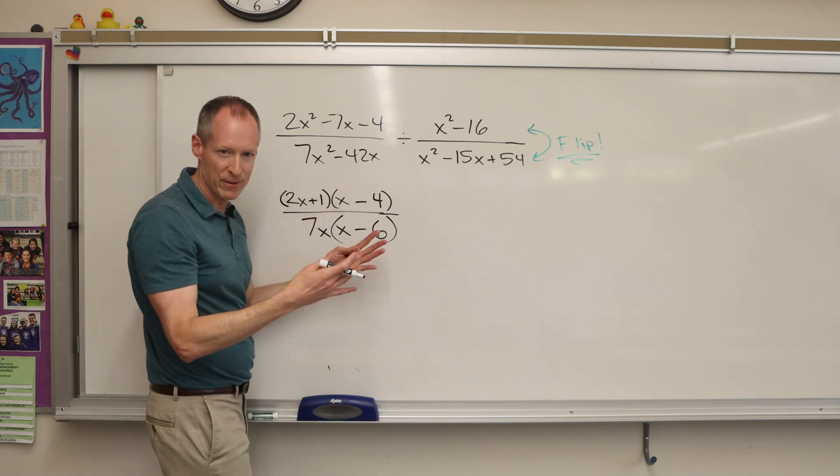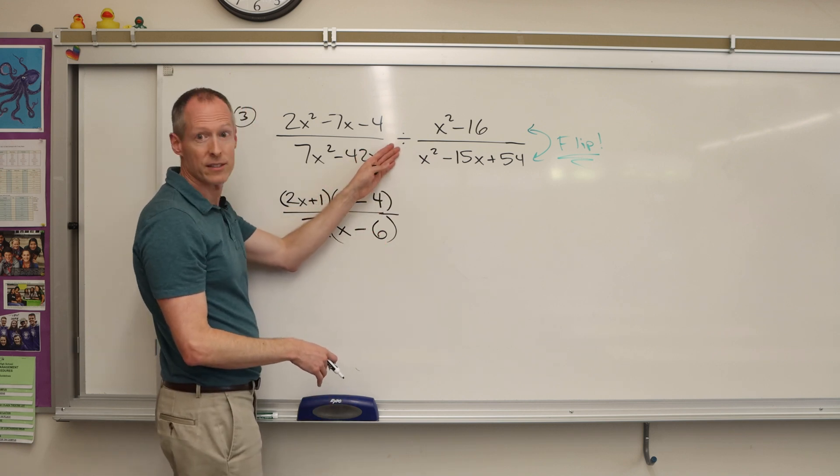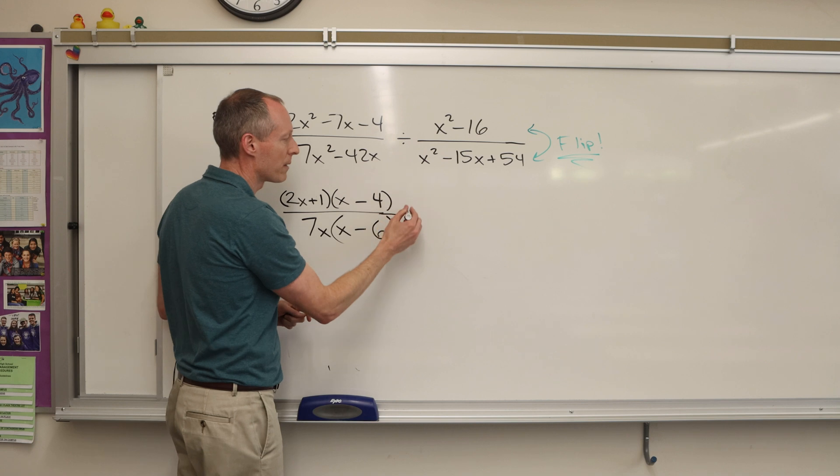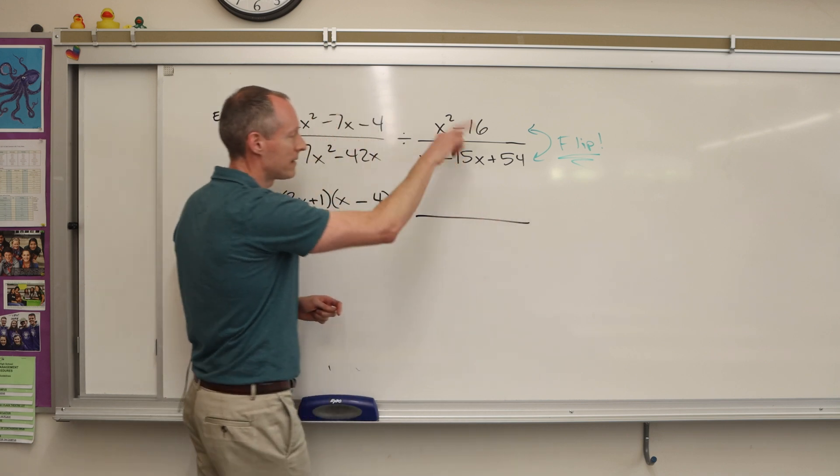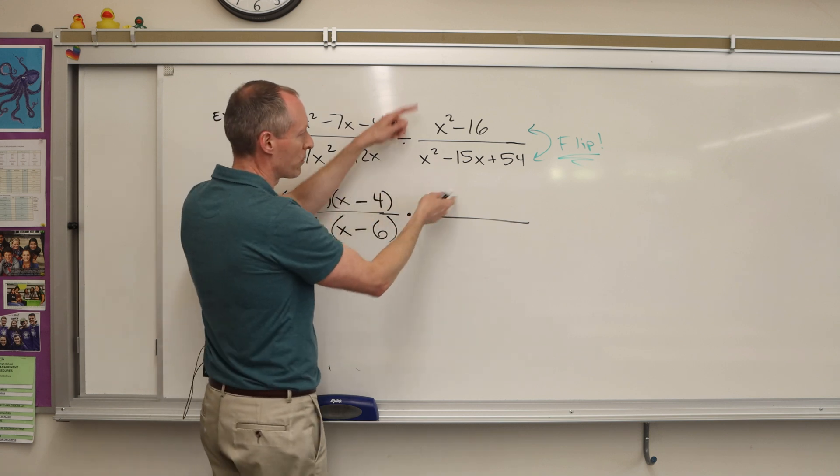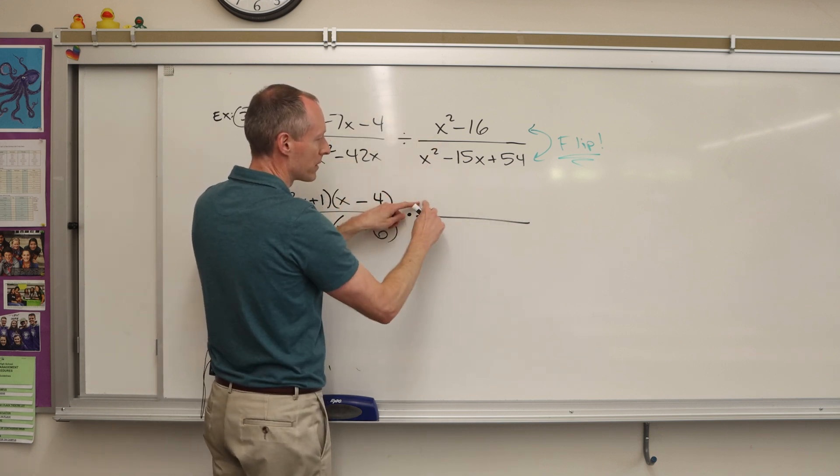Now here's where the memory device comes in again. Can you divide it? Don't even try it. You've got to flip it around and multiply it. So that becomes multiplication. These get flipped, and we can save time by factoring as we flip. So I'm going to do this one right now on top.